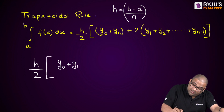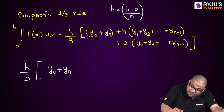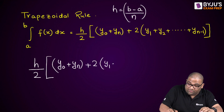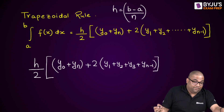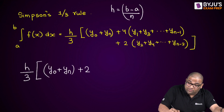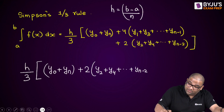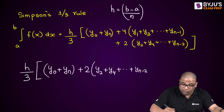In the trapezoidal rule: y₀ + yₙ, then plus two times all the remaining terms. In Simpson's one-third rule: y₀ + yₙ is the same, but then two times the even-indexed terms only — y₂, y₄, etc. The odd-indexed terms are left out of that group.